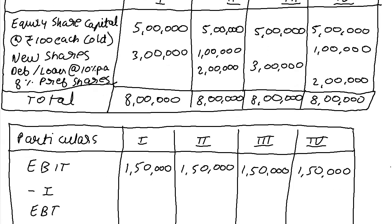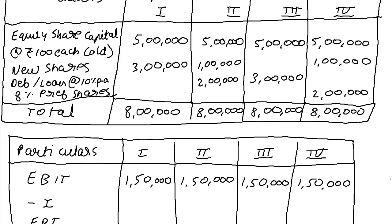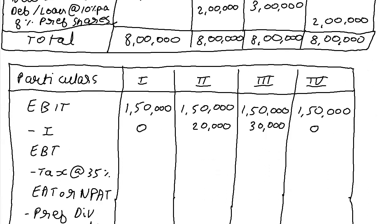In plan one there is no debenture or term loan, so interest is zero. Interest in plan two is 10% of ₹2 lakhs = ₹20,000. In plan three, 10% of ₹3 lakhs = ₹30,000. In plan four, there's no debenture or term loan so interest is again zero. Preference shares only exist in plan four: 8% of ₹2 lakhs = ₹16,000 preference dividend. Plans one, two, and three have zero preference dividend.